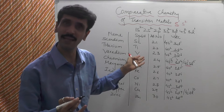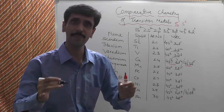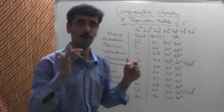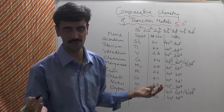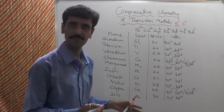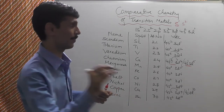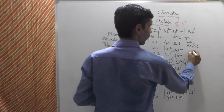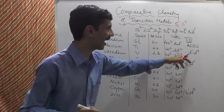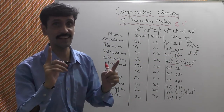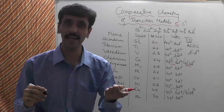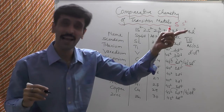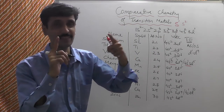So Chromium and Copper have anomalous electronic configurations. All other elements in the first transition series have two electrons in the 4s orbital, except Chromium and Copper, which have only one electron in 4s. Now coming to the definition of transition elements: in either the atomic state or the oxidation state, the element must contain an incompletely filled d orbital — that means D¹ to D⁹. This was explained in Part 1; please check the description box for that link.